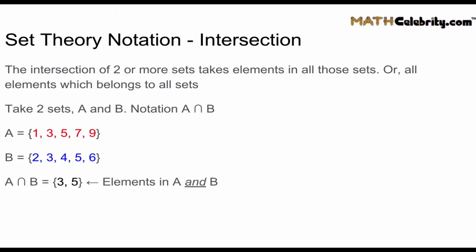So A intersection B is three and five. Because if you notice, the element three is in set A and B, and the element five is in both sets A and B. So that's our intersection. Intersection is also what do they have in common.